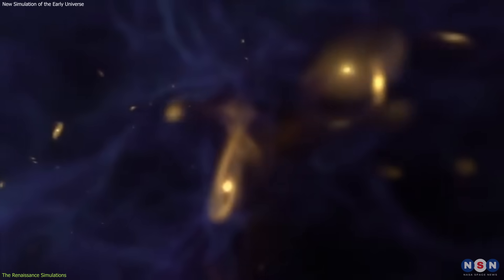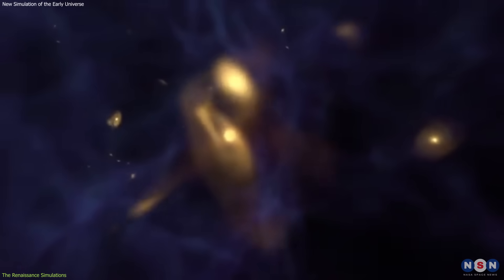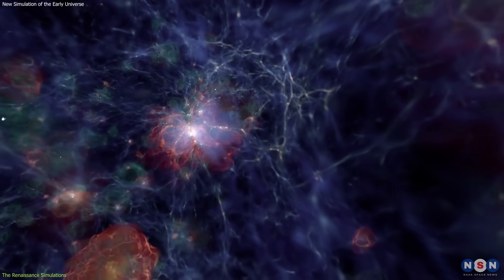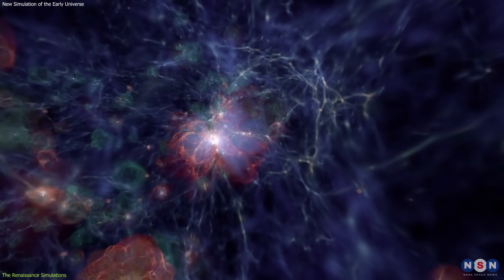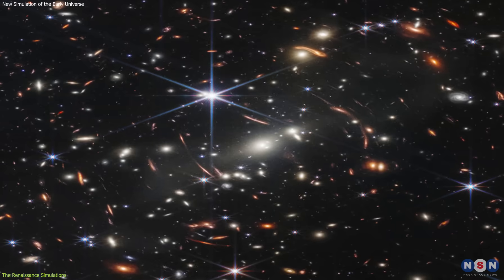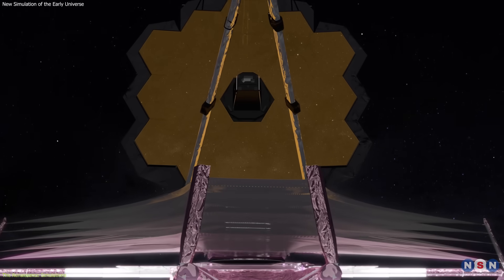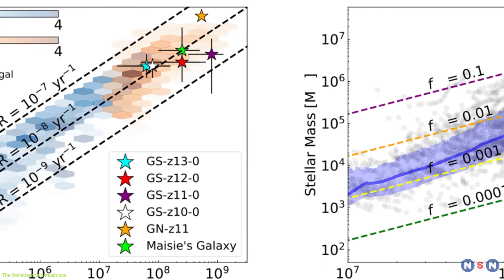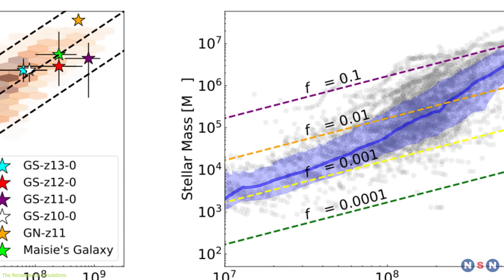They can also show how galaxies interact with each other, such as by merging or exchanging gas and stars. Here are some examples of simulated galaxies from the Renaissance Simulations and how they compare with real observations from the James Webb Space Telescope. As you can see, there is a remarkable agreement between the simulation and the observation.